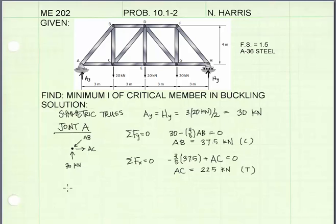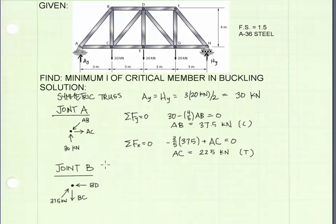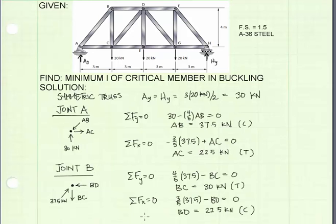Now, let's move on to joint B. I've drawn joint B. Remember, AB is known. It's a compression force. We'll solve for BD by summing forces in the x direction, solve for BC by summing forces in the y direction. Summing forces in the x and y directions, we get values for BD and BC. I'm going to continue this process for joints C and E, and thereby find axial forces in all members.